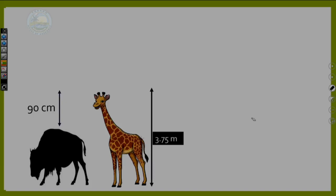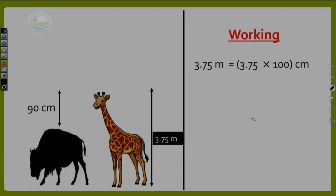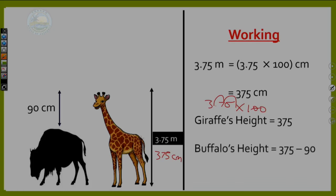The working: 3.7 meters multiplied by 100. We move the decimal two places forward — one, two — giving us 370 centimeters for the giraffe. Now, the buffalo is 90 centimeters shorter than the giraffe, so the height of the buffalo is 370 minus 90, which gives us 280 centimeters.